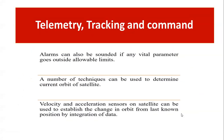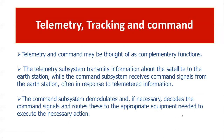If vital parameters exceed predetermined values, an alert is generated. Several techniques can be used to determine the current orbit of the satellite — its position, velocity, and acceleration. Velocity and acceleration sensors on the satellite help establish any change of orbit. Telemetry is a downlink function and command is an uplink function — they are complementary. Data is received through the receiving antenna, tracked, and correction commands are sent via the transmitting antenna.